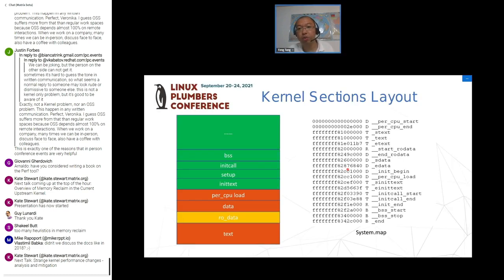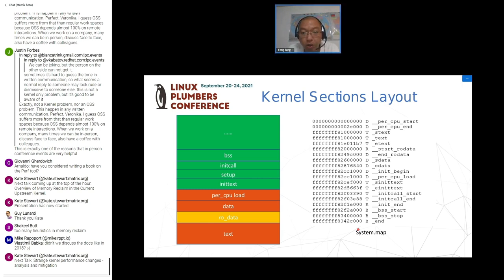Here we'll go through the kernel layout of the different sections. We have the text, read-only data, data, and per-CPU data, and other sections. This is what we get from the system map. According to the cases we checked — more than 20 — the red sections are likely to be affected. Most of them are commits related to the text, data, and per-CPU data sections. For others, it's green — it's just fine.